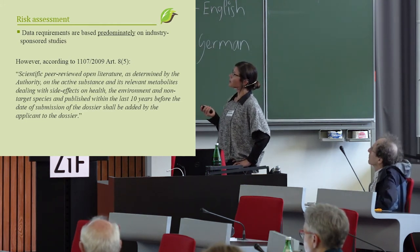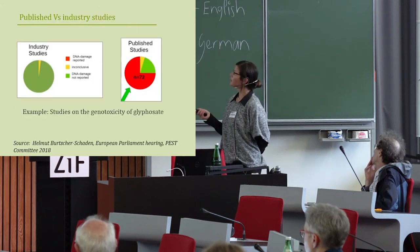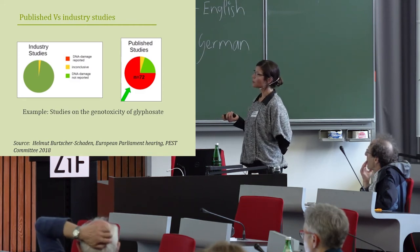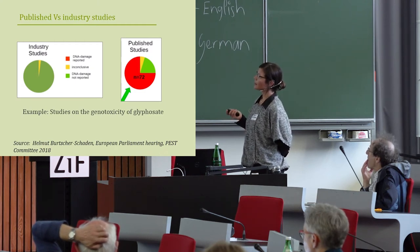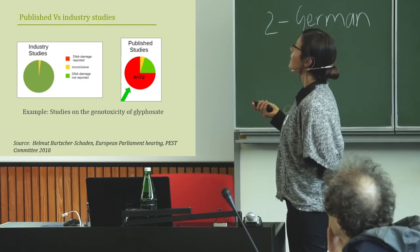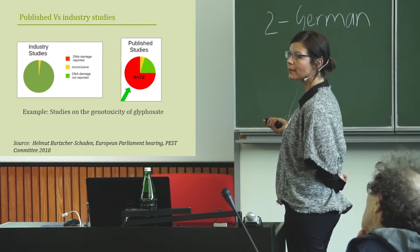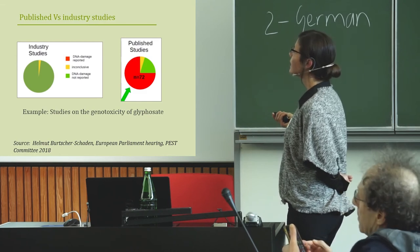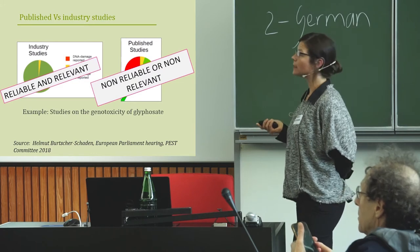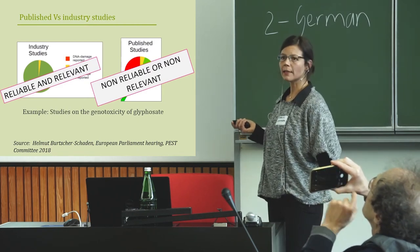The regulation requires use of scientific peer-reviewed literature — it is stated in Article 8.5 — but what we see is a focus predominantly on industry studies. In the case of genotoxicity, industry studies show a very small inconclusive fraction and the rest indicate no DNA damage. However, published academic literature completely changes the picture.